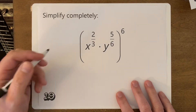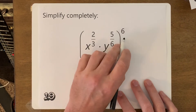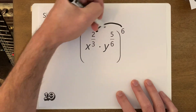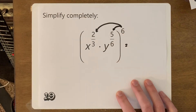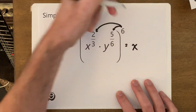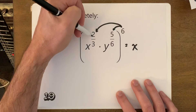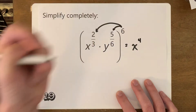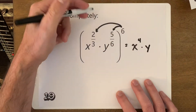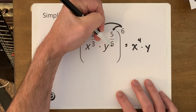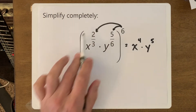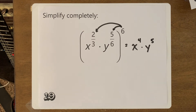This one has an x and a y, with 6 on the outside and two fractional exponents inside, so we distribute to both. For x: 2 thirds times 6 — 6 times 2 is 12, divided by 3 is 4 — so x to the fourth. For y: 6 times 5 is 30, divided by 6 is 5 — so y to the fifth. That expression that looked complicated turns out to be just x to the fourth times y to the fifth.